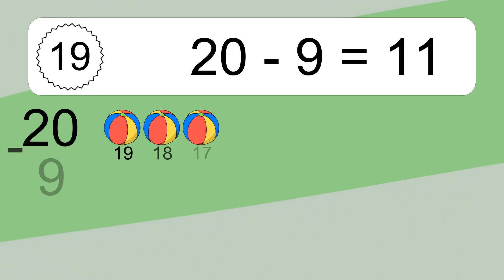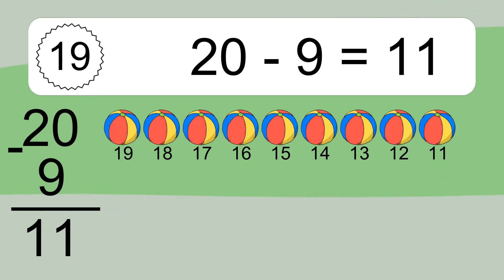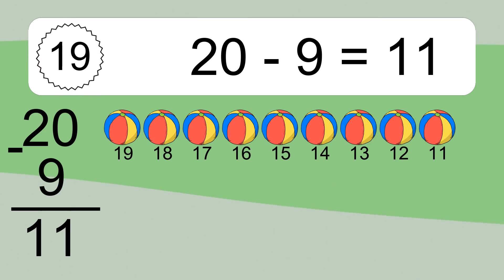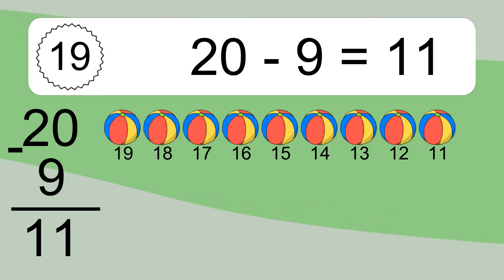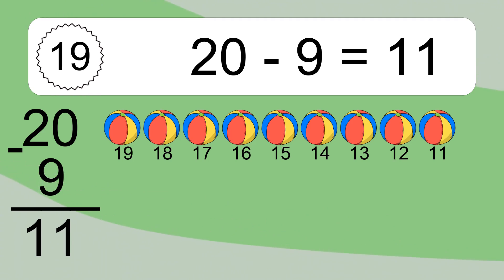20 minus 9 equals what? 20 minus 9 equals 11. Let's count it: 19, 18, 17, 16, 15, 14, 13, 12, 11.